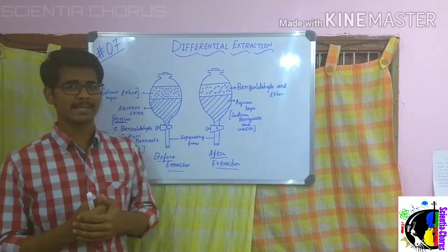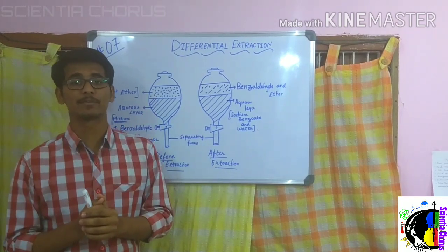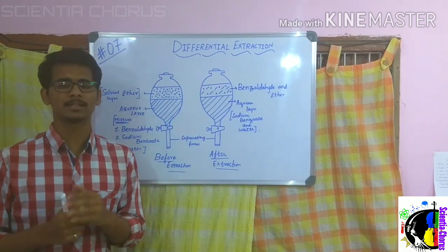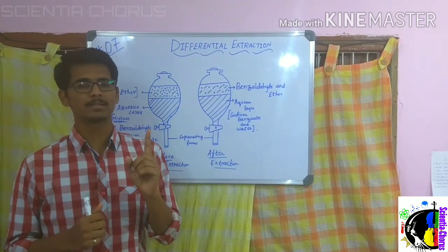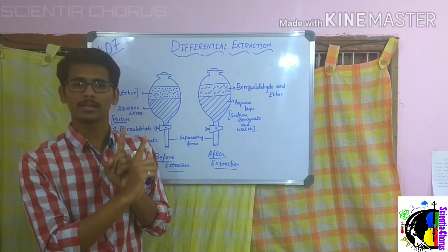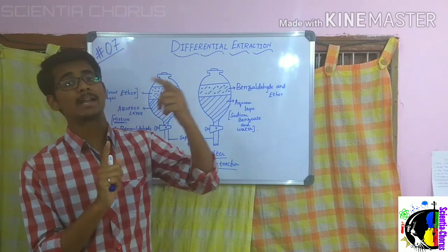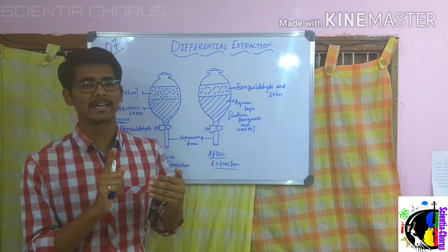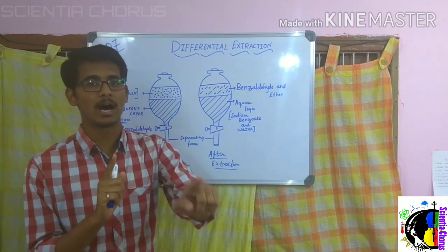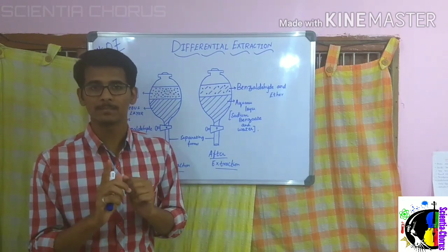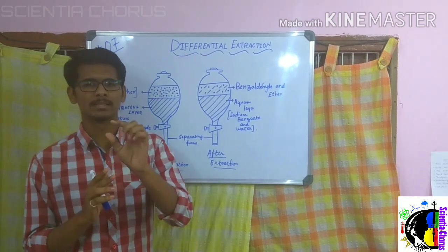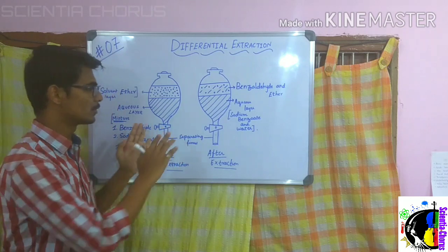Let us take an example and clearly understand differential extraction or solvent extraction. Before going to the experiment, I just want to tell a small story. A person named Raju has a good friend named Sam. Raju also has another very close friend named Arul, so Raju is always more comfortable with Arul than with Sam, but still Raju and Sam are good friends. We will apply this story to the experiment.